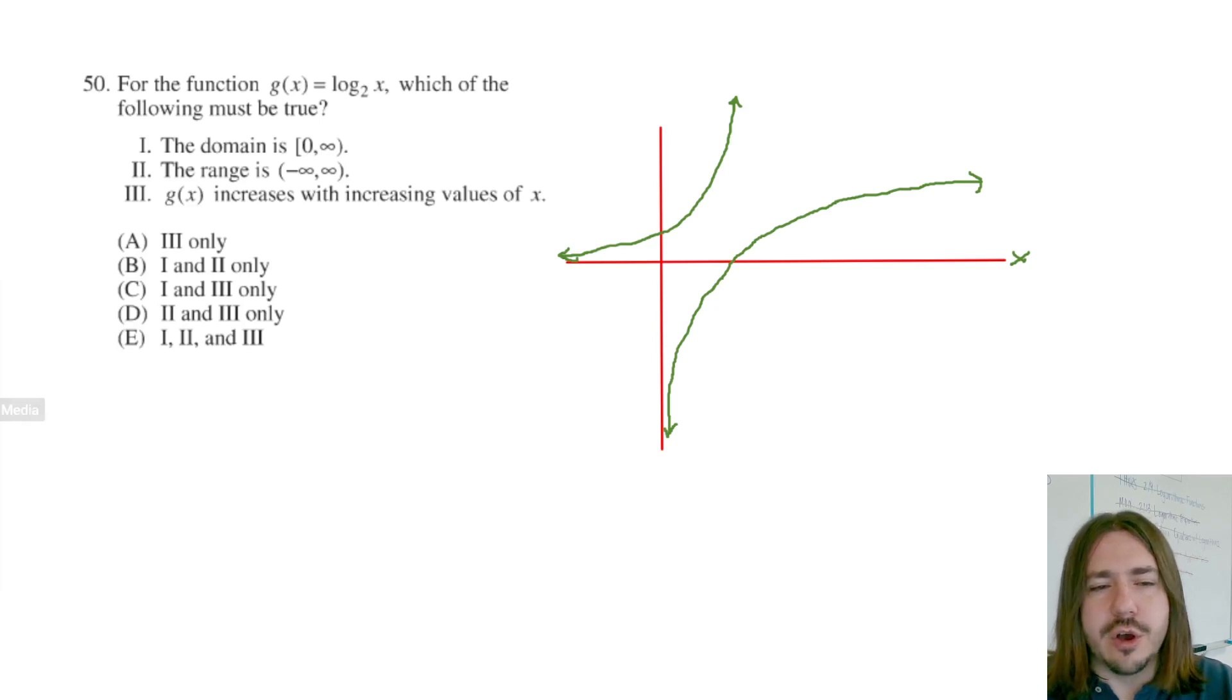Basically it's a reflection over the line y equals x. So just to clean this up a little bit, I'm going to delete that exponential function. And for this particular function, if I input 1, 2 to the 0 power is 1. So this point right here is going to be 1, 0.